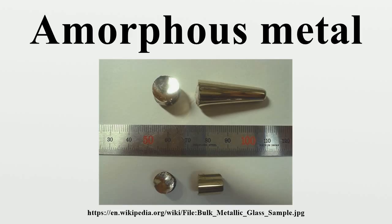In 1976, Lieberman and C. Graham developed a new method of manufacturing thin ribbons of amorphous metal on a supercooled fast-spinning wheel. This was an alloy of iron, nickel, phosphorus and boron. The material, known as Metglas, was commercialized in the early 1980s and is used for low-loss power distribution transformers.